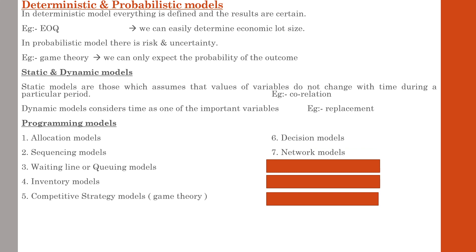The next is network models. Network models involve determining an optimum sequence of performing certain operations concerning some jobs in order to minimize time or cost. These models are applicable in big projects like construction of a dam, construction of a building, or missions to send a spacecraft to another planet — usually large, one-time projects that require more time to complete. Two important types of network models are CPM and PERT, which we will study in higher classes.